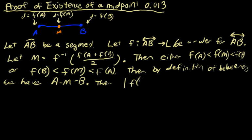Then, we use the points from earlier: |f(M) - f(A)| equals |(f(A) + f(B)) / 2 - f(A)|. And we need to make sure that's a positive distance, so we'll take the absolute value of that.